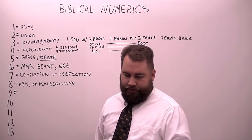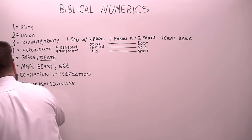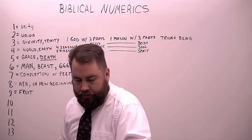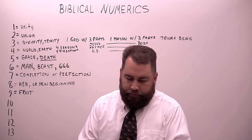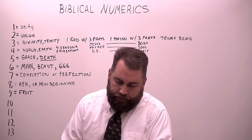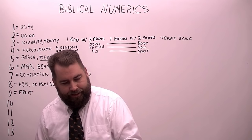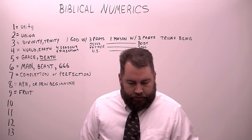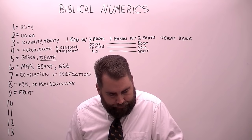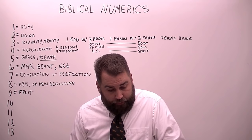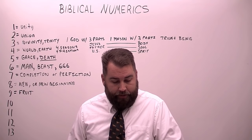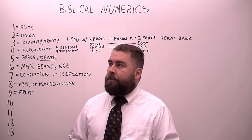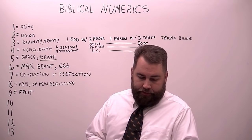Next, we have the number nine. Larkin doesn't have the number nine, but nine is the number of fruit in the Bible. If you go to Galatians 5:22, there are nine fruits of the Spirit. 'The fruit of the Spirit is love, joy, peace, long-suffering, gentleness, goodness, faith, meekness, temperance.' So nine different things make the fruit of the Spirit — nine, the number of fruit.